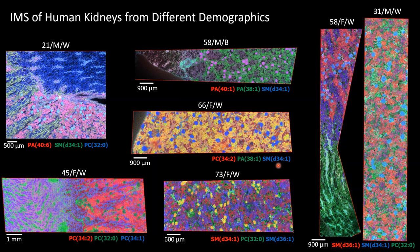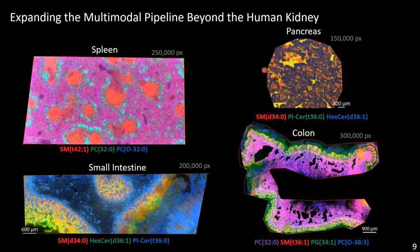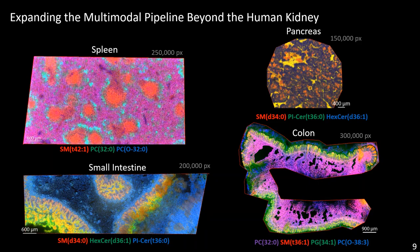We can make molecular profiles of individual organ regions within the kidney, such as a medulla profile, and see how this varies as a function of demographic. And while I'm showing kidney mostly, there's nothing limiting us from performing this analysis on different organs — we've collaborated with others at HuBMAP to look at the spleen, pancreas, colon, and small intestine. We can see different biological regions such as red pulp in the spleen, multiple layers in the intestines, and even islets in the pancreas. These images are over a hundred thousand pixels each and take about eight hours to acquire at 10-micron spatial resolution.